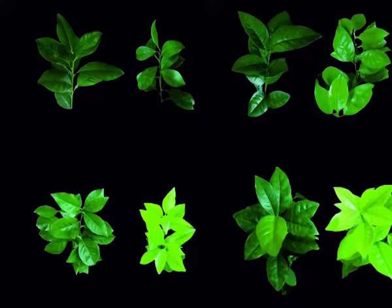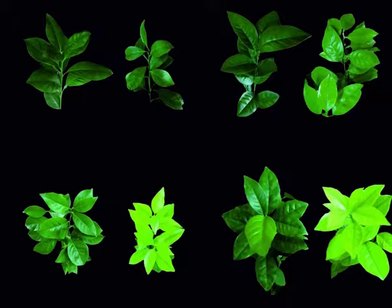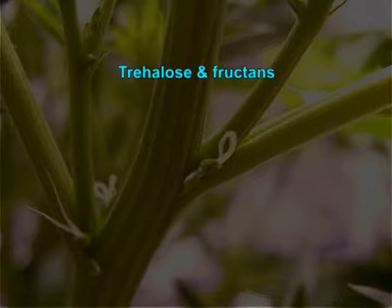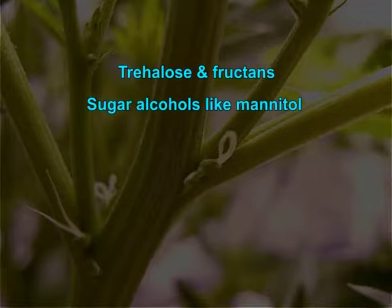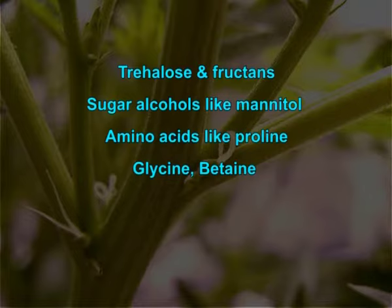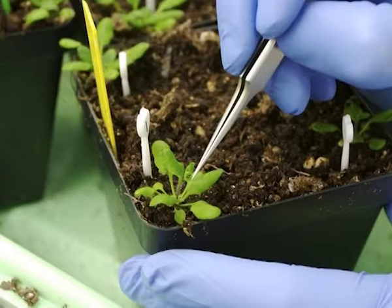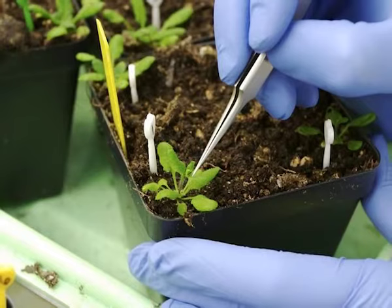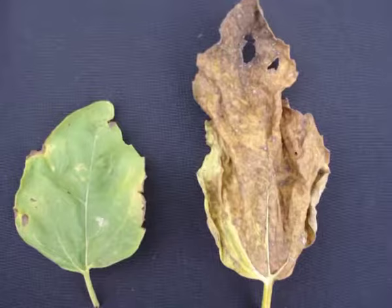Plants display their abiotic stress responses through the production of stress-related osmolytes like sugars such as trehalose and fructans, sugar alcohols like mannitol, amino acids like proline and glycine betaine, and specific proteins like antifreeze proteins. Transgenic plants have been developed which overexpress genes for one or more of these compounds, and such plants display improved tolerance to environmental stresses.